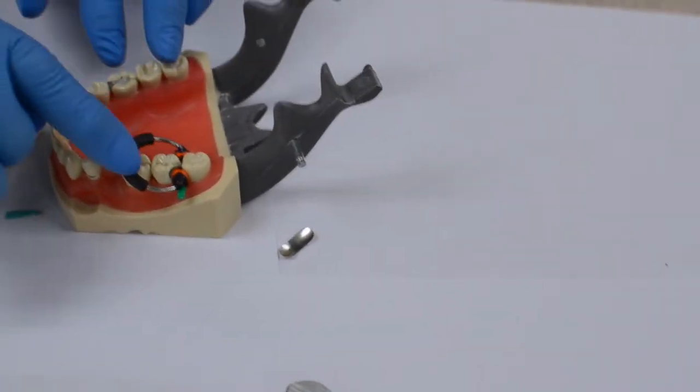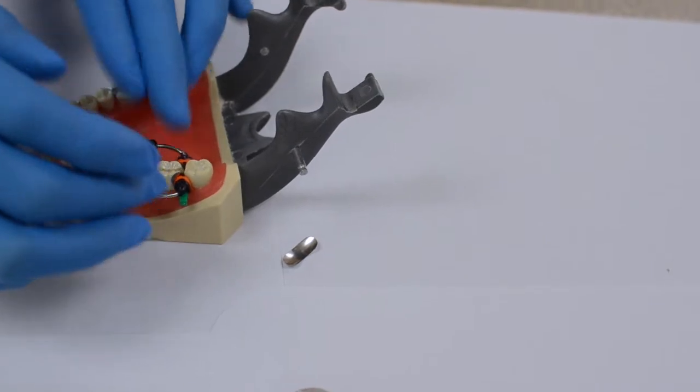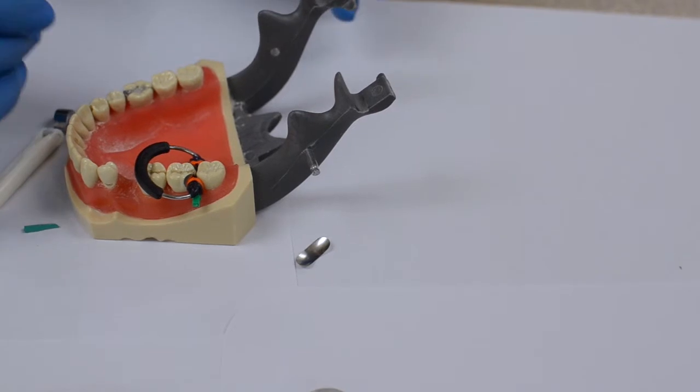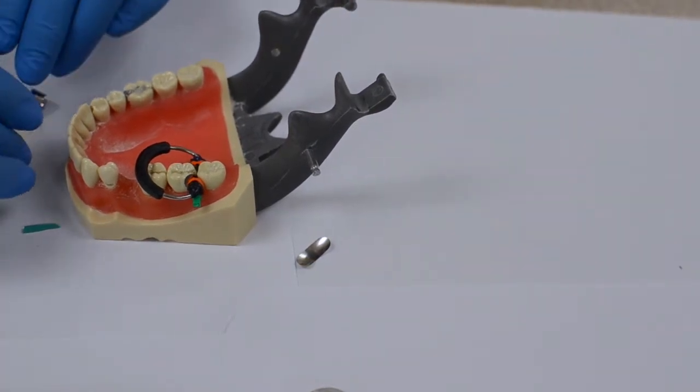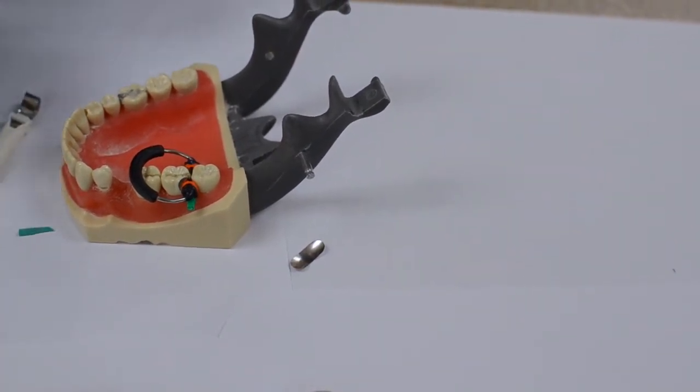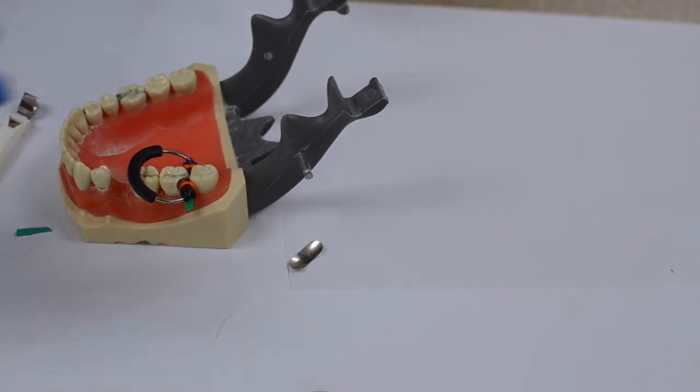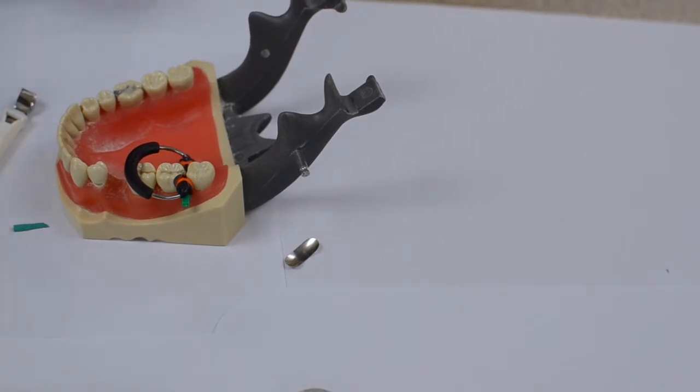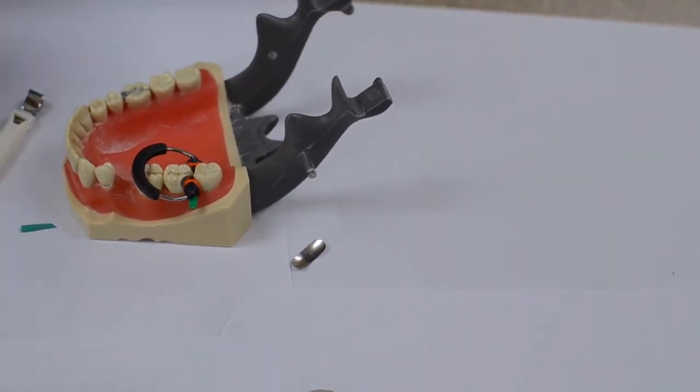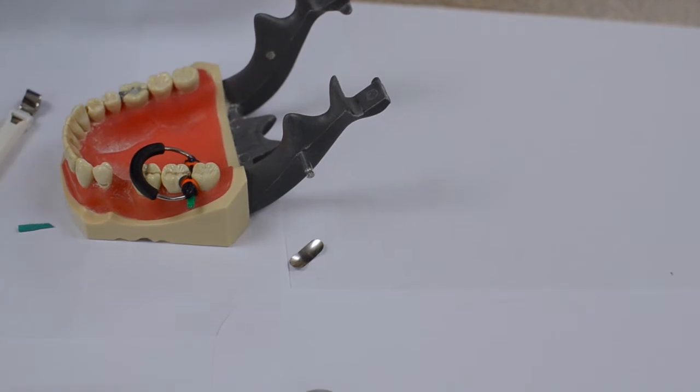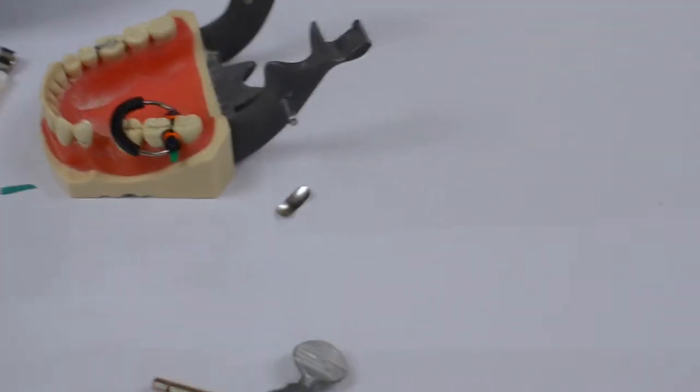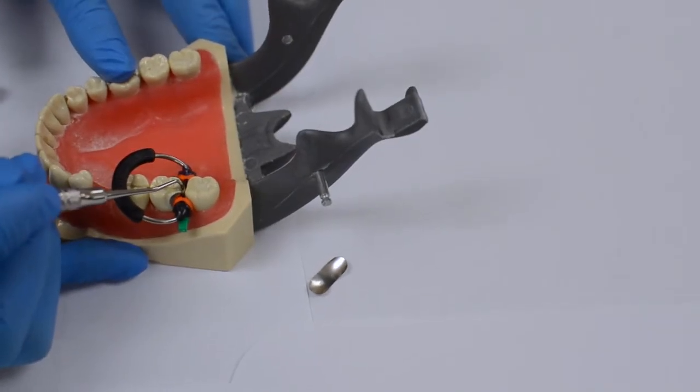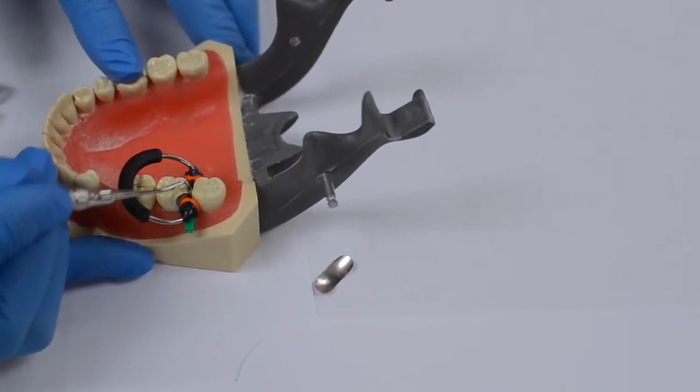Ta-da! Now, this ring is very good at creating separation so that you have more positive contact. And that is extremely important because you cannot condense composite the way you would amalgam. It just doesn't have the stiffness to it. So this really is extremely beneficial. But you're also going to burnish it a little bit. Don't burnish too much because you'll get too much contact.